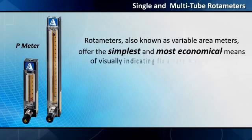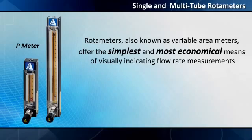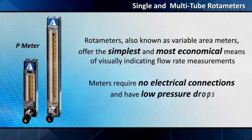Rotometers, also known as variable area meters, offer the simplest and most economical means of visually indicating flow rate measurements. Meters require no electrical connections and have low pressure drops.